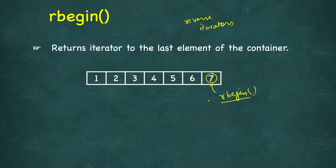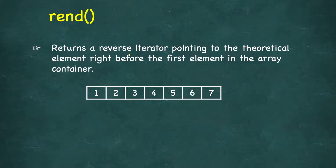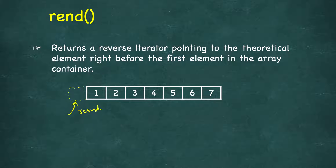Dereferencing rbegin should print 7. Similarly, rend returns a reverse iterator pointing to the theoretical element right before the first element. The container's address starts at the first element, but we assume there is a theoretical element before it — rend points there, and we should not try to dereference it.